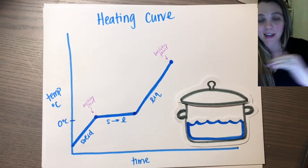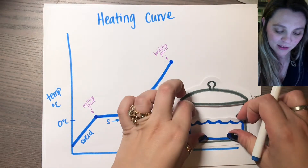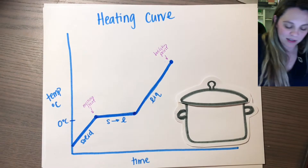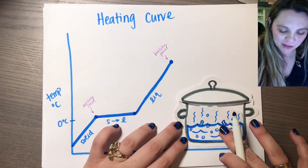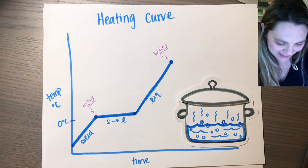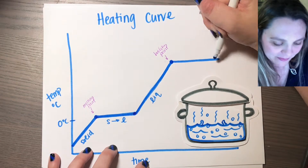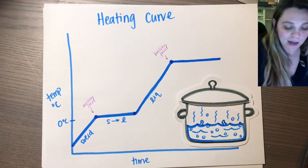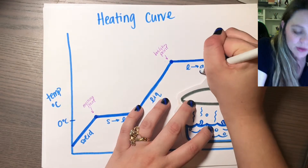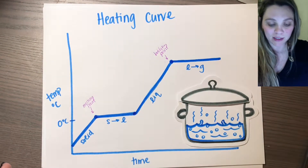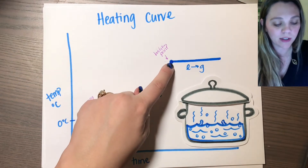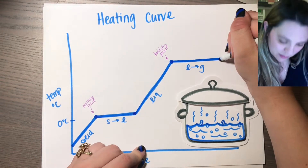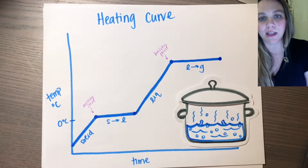And I'm going to plateau again, I'm going to flatline again, because now my liquid water is changing into water vapor. So it flatlines again — I have another phase change. I'm going from a liquid to a gas, I'm boiling. So at this point right here, everything is a liquid, then I'm starting to boil, so I have both a liquid and a gas, and boom, I get to this point and now everything has boiled.